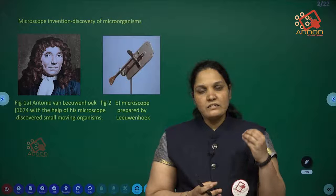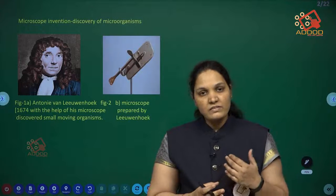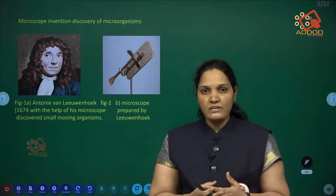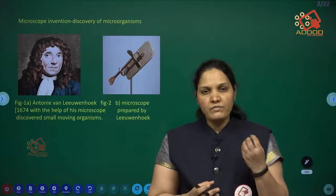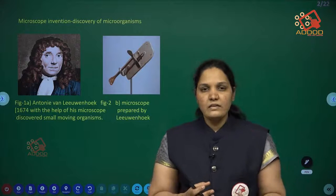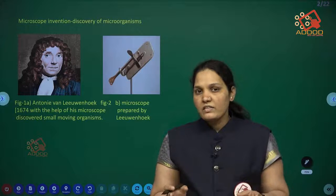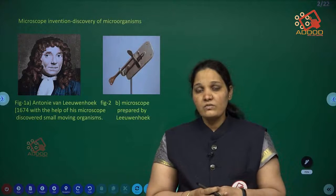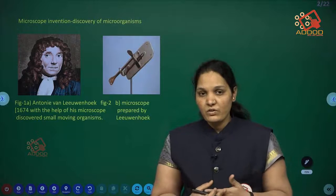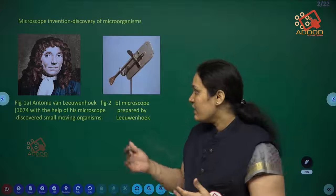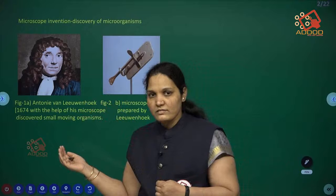What are microorganisms? Microorganisms are tiny living organisms we cannot see with our naked eye. 'Micro' means very small, and 'organisms' means living. Those which we cannot see with our naked eye are called microorganisms. They were discovered by Antony van Leeuwenhoek.